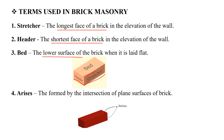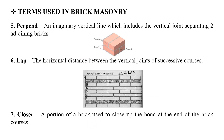Arris will form a brick where plane surfaces intersect and form a region. Perpend is an imaginary vertical line which includes the vertical joint separating two adjoining bricks.